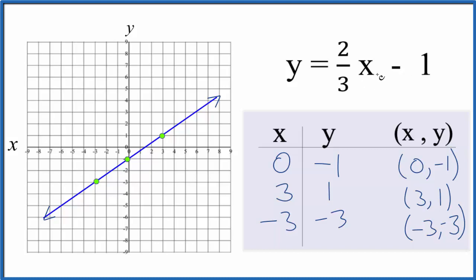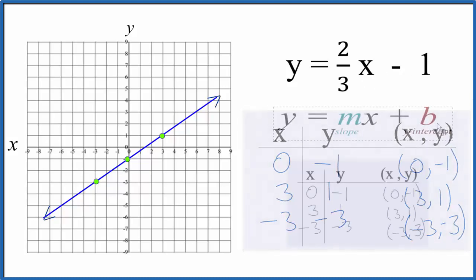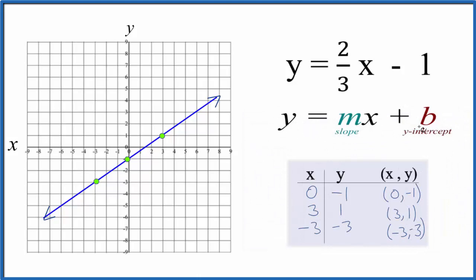Let's check our work with the slope-intercept formula. We have y equals mx plus b. b is the y-intercept, and that's negative one. So the line should cross the y-axis at negative one. And right there, it does. That makes sense.